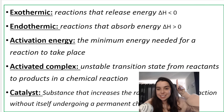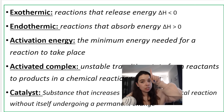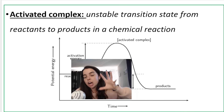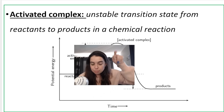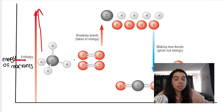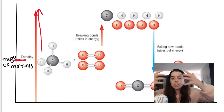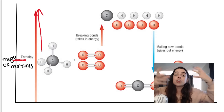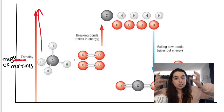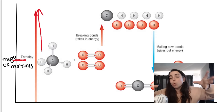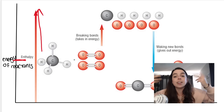The next important term is the activated complex — the unstable transition state between reactants and products in a chemical reaction. On a potential energy diagram, it is the peak of the curve. What happens is the reactants absorb activation energy, which causes the bonds of the reactants to break, forming individual atoms. This is the unstable transition state. It's unstable because atoms existing by themselves are not stable, so they reconfigure in a new way to form products.